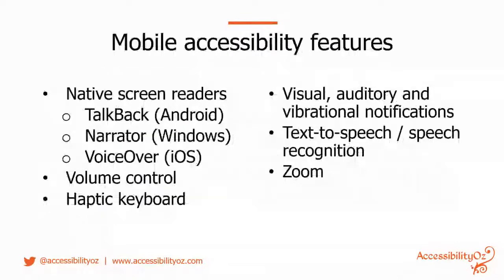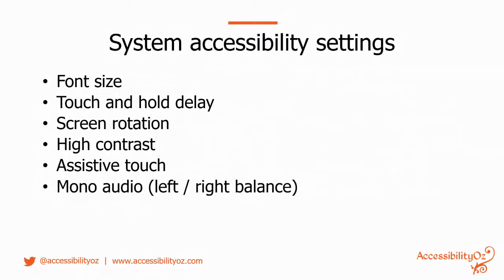I'll take a step back and explain why mobile is different to desktop. Mobile has a lot of native screen readers such as TalkBack, Narrator, and VoiceOver. It's very different to the desktop environment, where if people don't like the available screen readers like JAWS they can go build something like NVDA — you really can't do that on mobile. And not just screen readers: there's also volume control, haptic/vibrational notifications, text to speech, speech recognition, zoom, and a number of system accessibility settings that people with disabilities will use, but also many people without disabilities use as well — such as font size, touch-and-hold delay, screen rotation, high contrast, assistive touch, and mono audio.